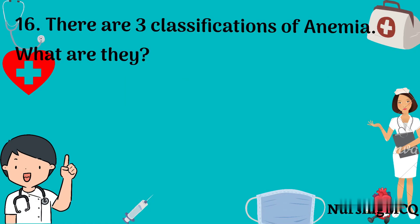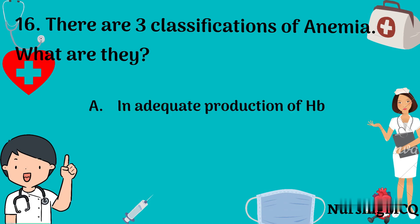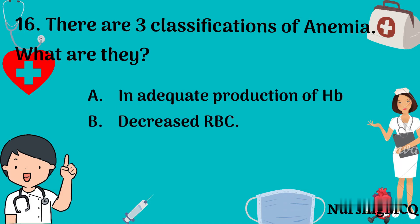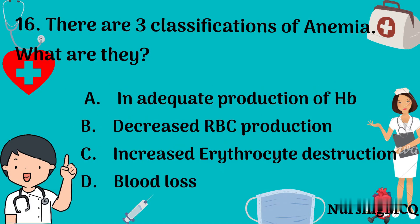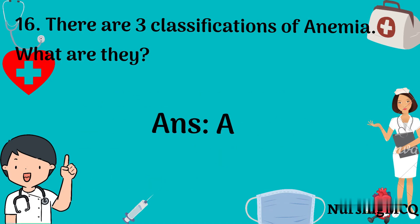Question number 16: There are three classifications of anemia. What are they? Option A: inadequate production of hemoglobin, Option B: decreased RBC production, Option C: increased erythrocyte destruction, Option D: blood loss. The right answer is Option A: inadequate production of hemoglobin.